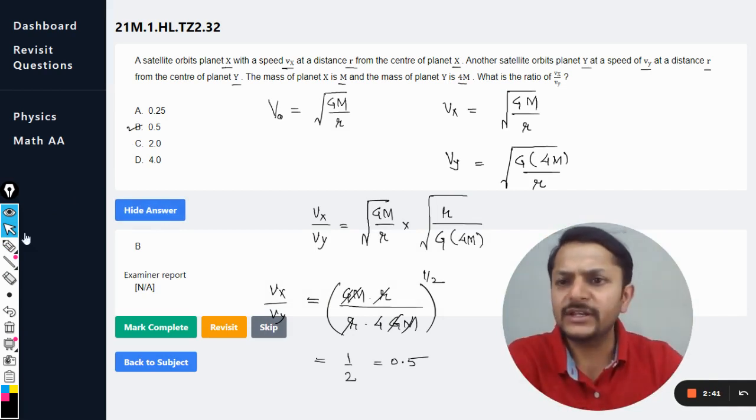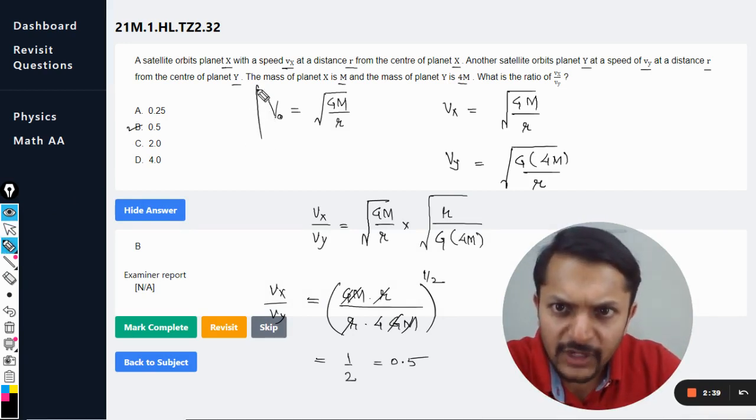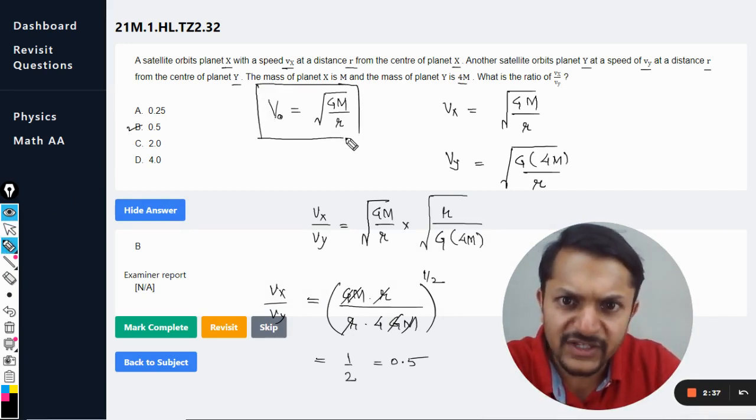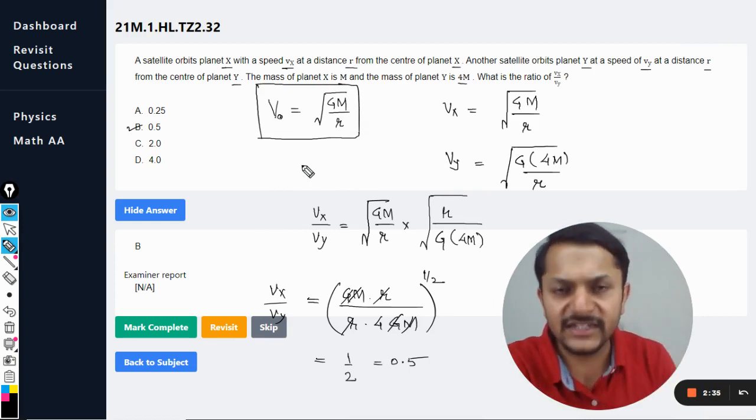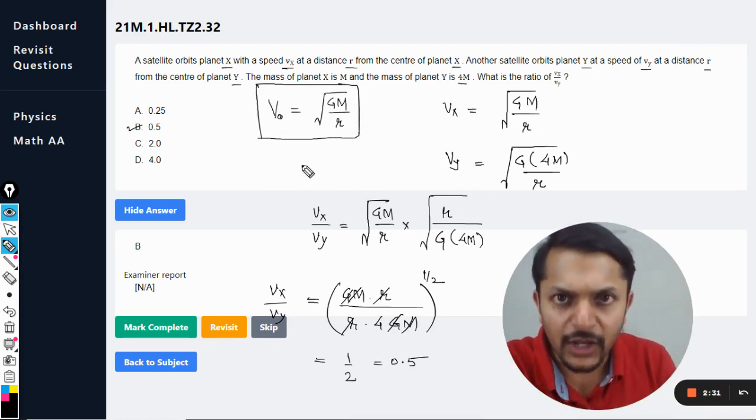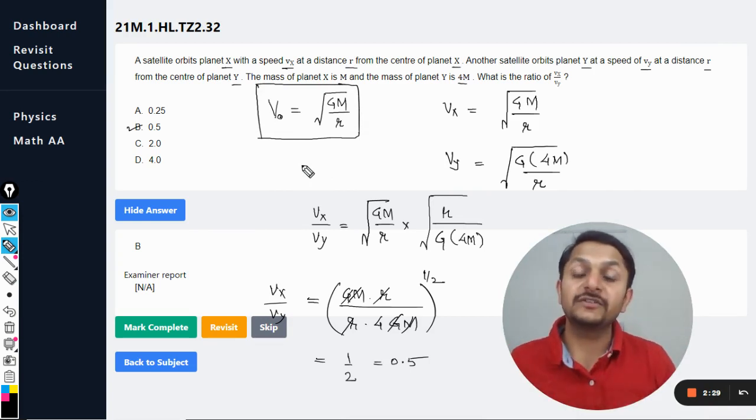So my dear students, this is how we do it. And this is the formula which is really very important. I believe this formula is given in the data booklet. Please verify the formula for the orbital velocity. So my dear students, this is Professor Varun. Please share the YouTube channel with all of your friends.